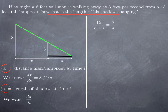Multiplying everything by x plus s and s, we obtain that 18s is 6 multiplied by x plus s. Multiplying things through on the right hand side gives 6x plus 6s. If I subtract 6s on both sides, I'm going to get 12s equal to 6x.